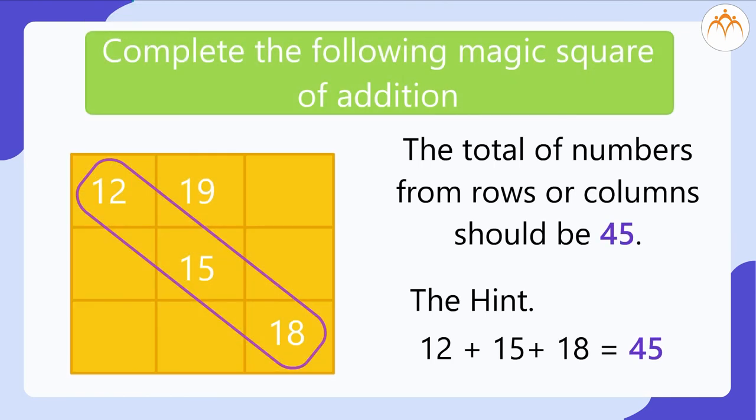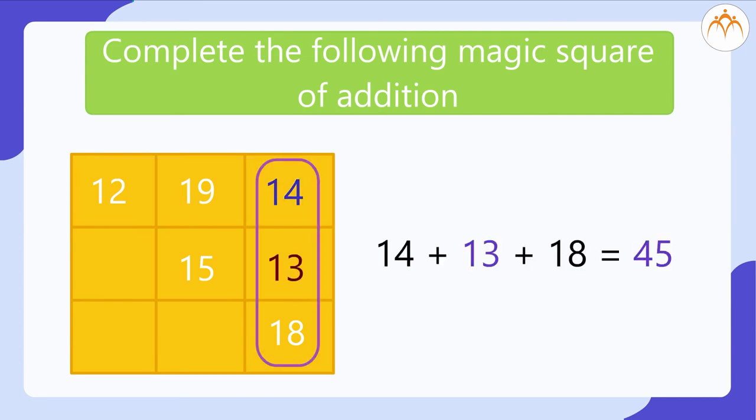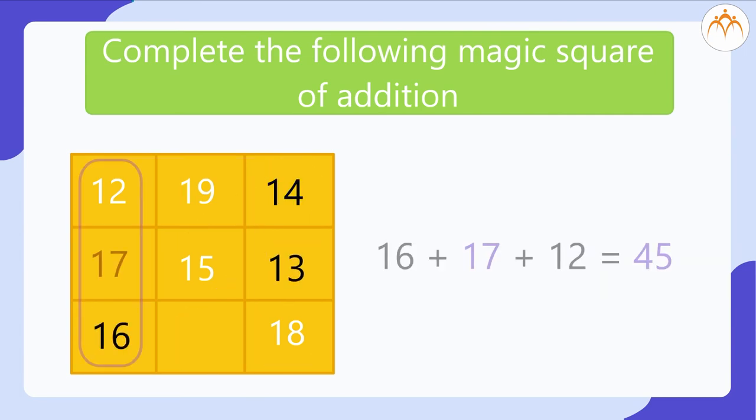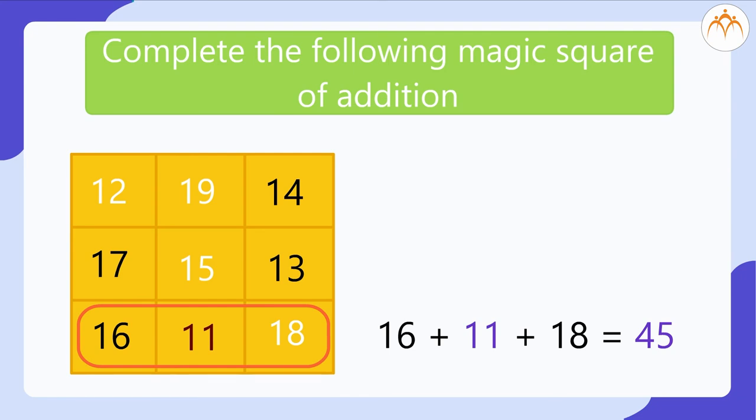Complete the following magic square of addition. The hint is 12 plus 15 plus 18 is equal to 45. The total of the numbers from rows or columns should be 45.